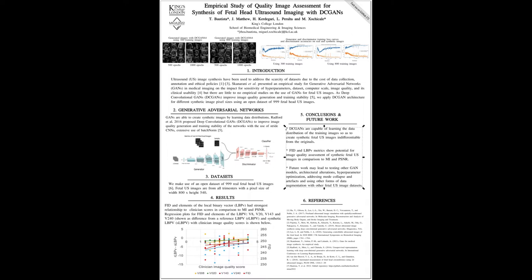In terms of the results, we present the Fredshed Inception Distance or FID and the elements of local binary vector, showing a stronger relationship to its clinical score in comparison to the mutual information and peak signal noise to ratio. These are shown in regression plots where you can see the FID scores and the LBPB values.